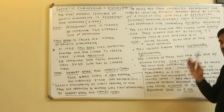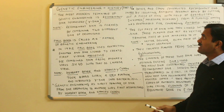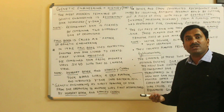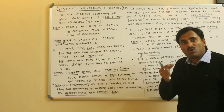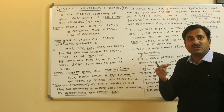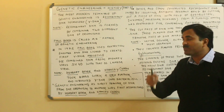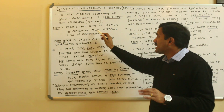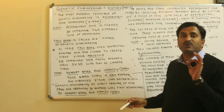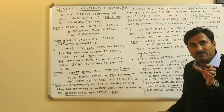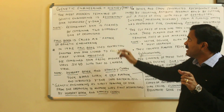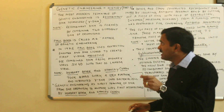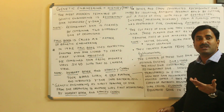Now the question is: what is a recombinant? Recombinant means a combination of two different things. Recombinant DNA is formed by combining two different DNAs from different organisms.